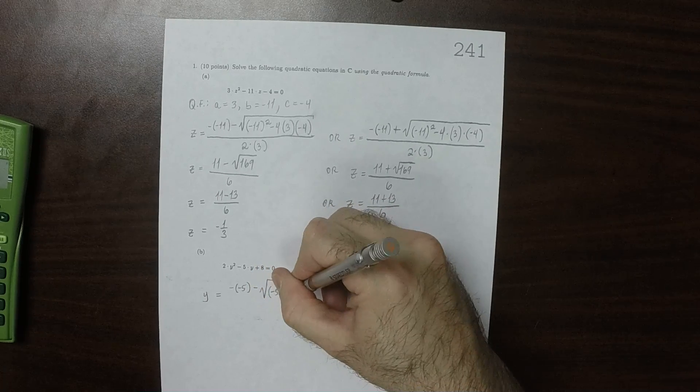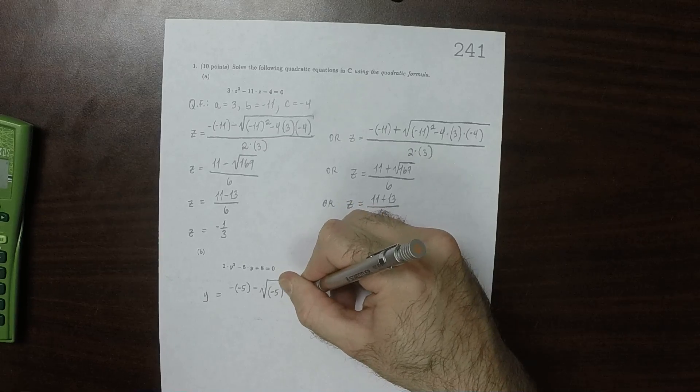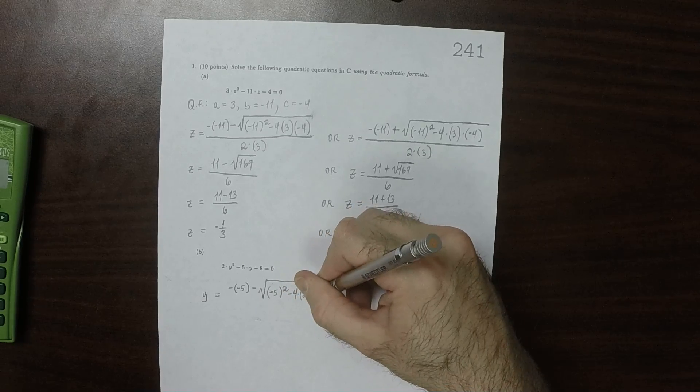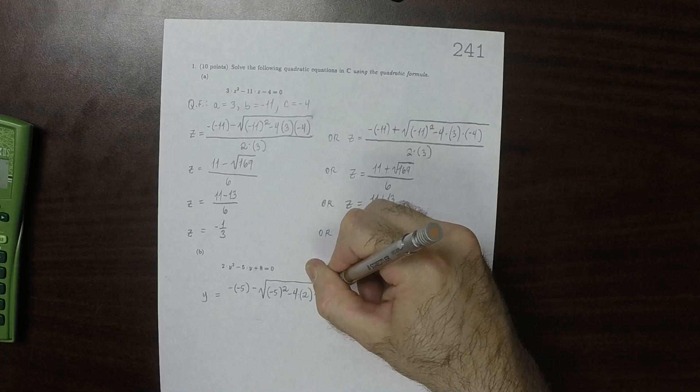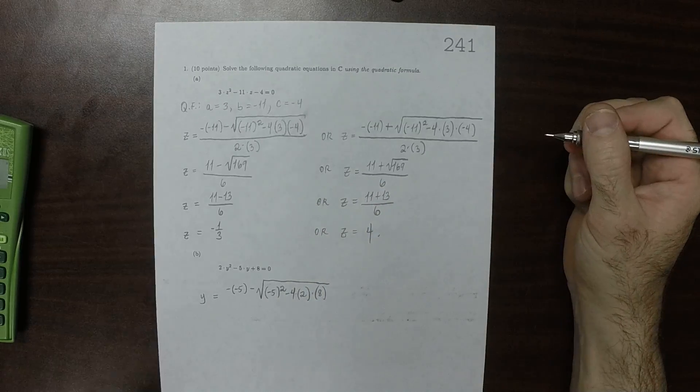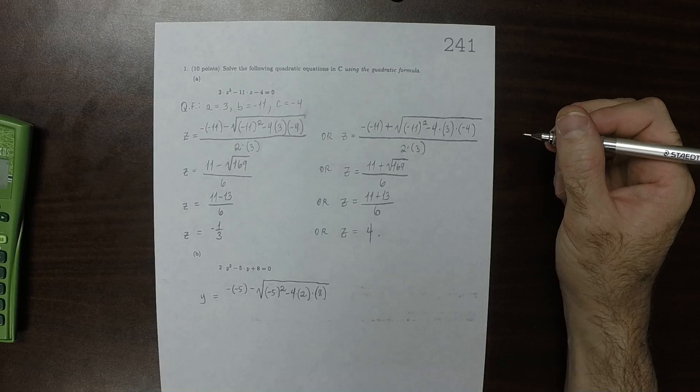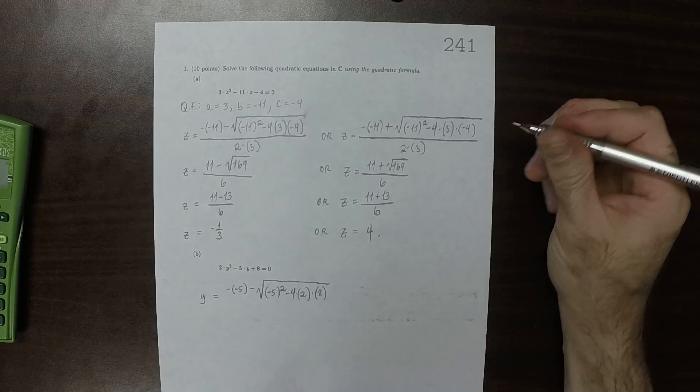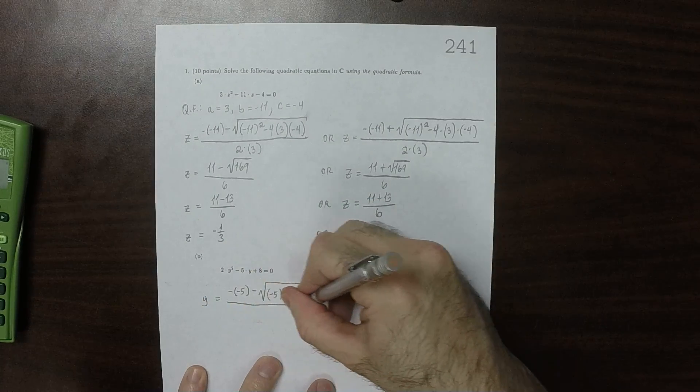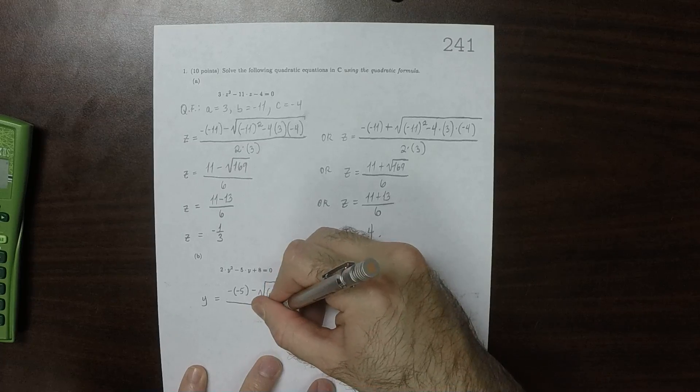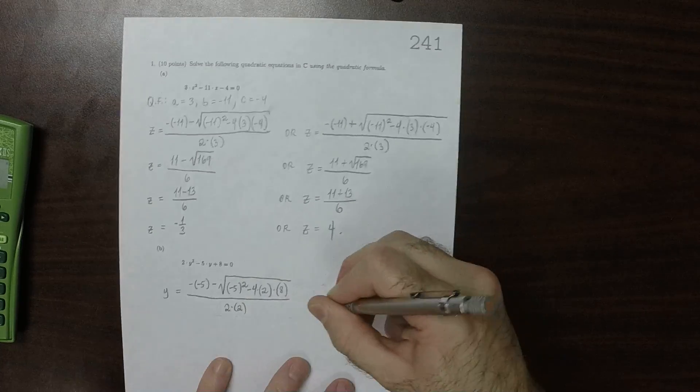So b squared minus 4 times 2 times 8 over 2 times 2. That's one possibility.